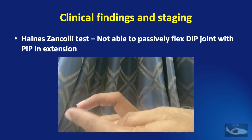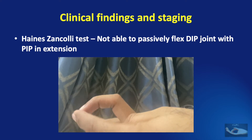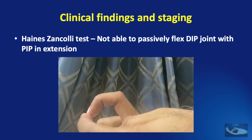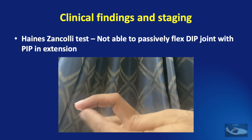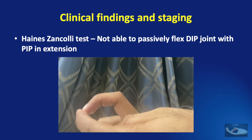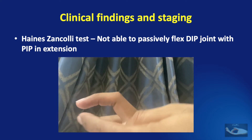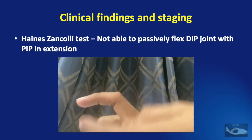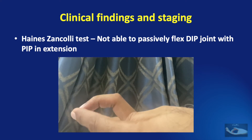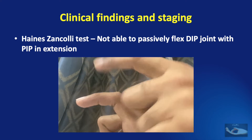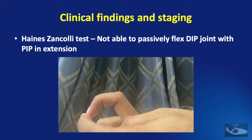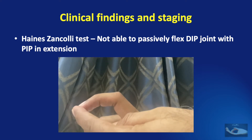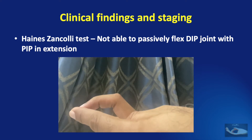On putting the PIP joint passively into flexion, if the DIP joint is now able to be flexed passively, it indicates that the retinacular ligaments are tight and the joint capsule is lax. This test, if positive, signifies that conservative management may not be useful.